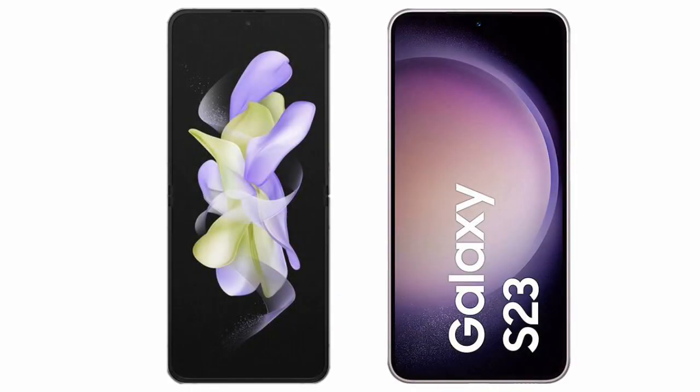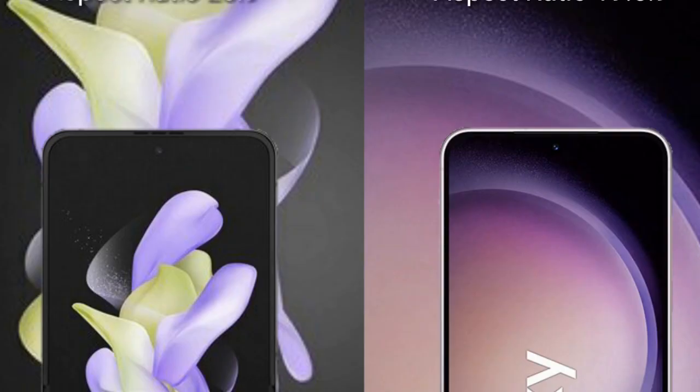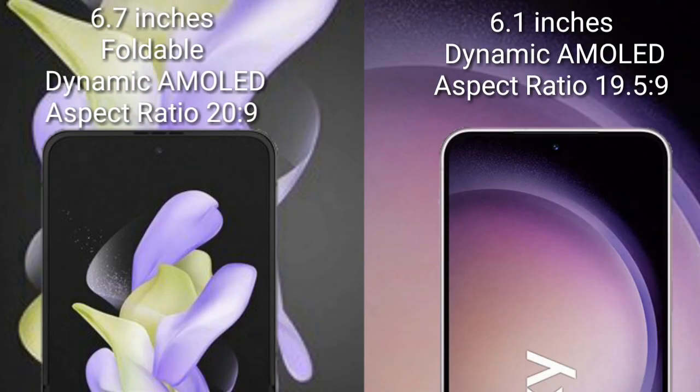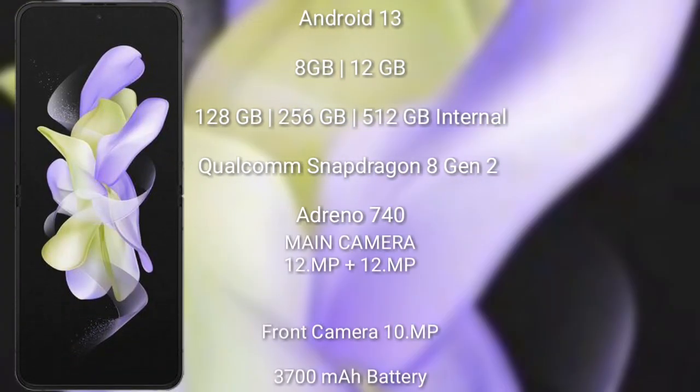I will compare the new Samsung Galaxy Z Flip 5 with Samsung Galaxy S23. Samsung Galaxy Z Flip 5 comes with a 6.7-inch foldable dynamic AMOLED display and aspect ratio 20x9. Samsung Galaxy S23 comes with a 6.1-inch dynamic AMOLED display and aspect ratio 19.5x9. Samsung Galaxy Z Flip 5 runs on the Android 13 operating system.